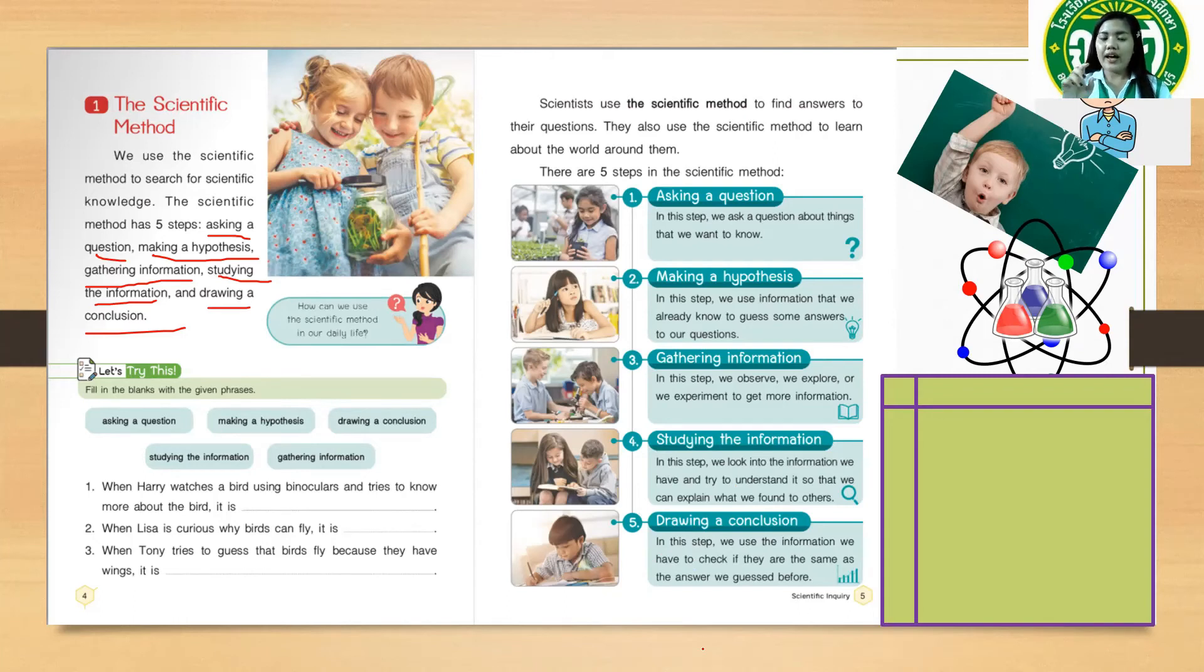the red ant has a red body and six legs. And then you can check whether your hypothesis and your conclusion match together. All right. Okay, so those are the five steps of the scientific method.